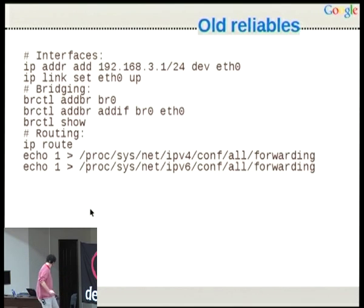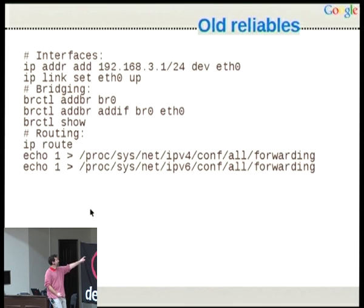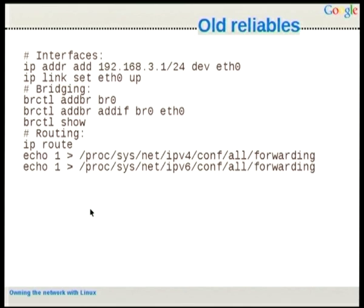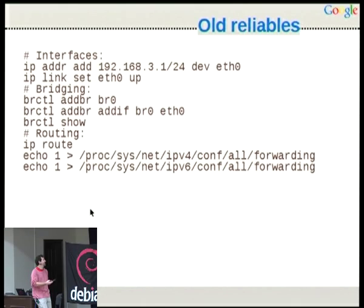So this is just basic things you're all used to doing. We can easily add an address to an interface, set the link up or down to activate or deactivate an interface, do simple bridging — that's what we normally do to create virtual machines and attach them to a bridge — and do basic routing, enabling traffic to go from one interface to another. We all know this, hopefully, just to put things in context.